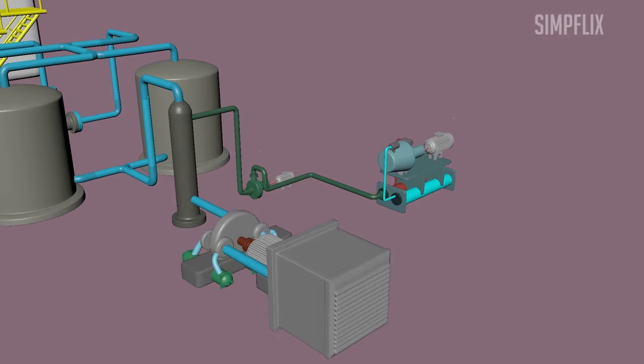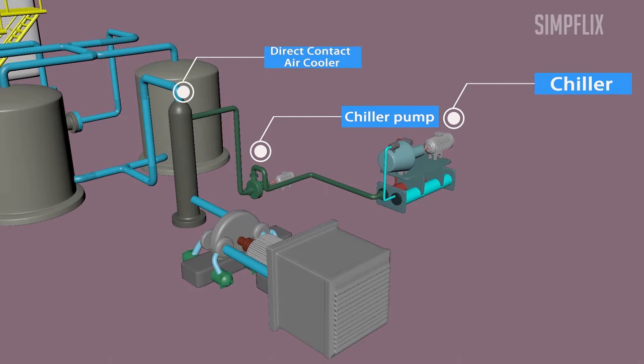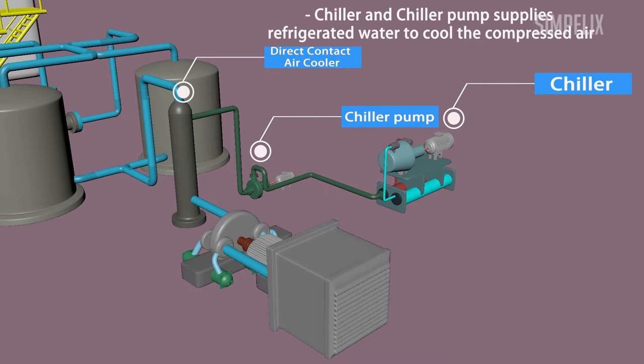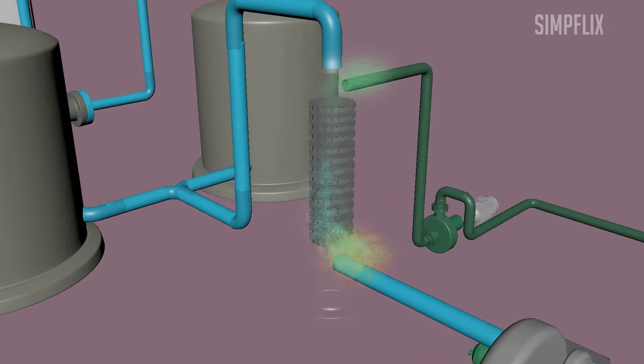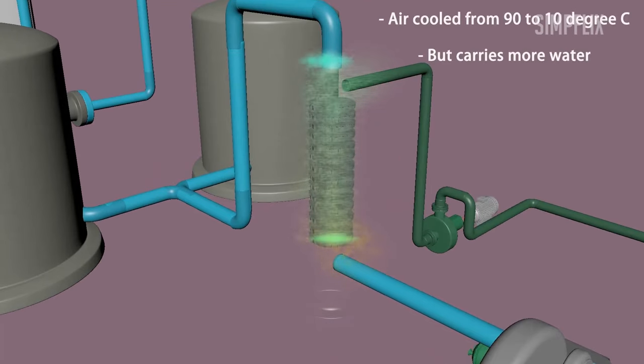So the high pressure air at high temperature is cooled in the pre-cooling system to around 10 degrees Celsius using refrigerated water. During this cooling process, air will capture additional moisture as it is in direct contact with water.